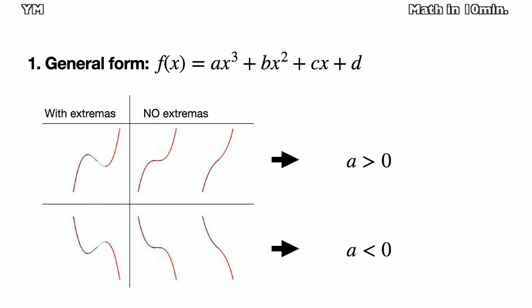The cubic function has either both local maximum and minimum, like the left two graphs, or none, like the rest of them.